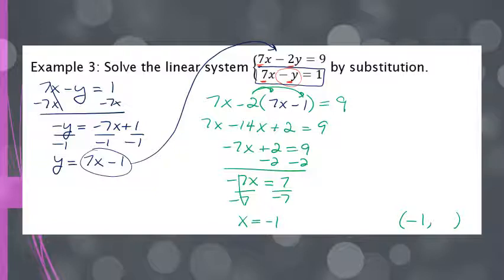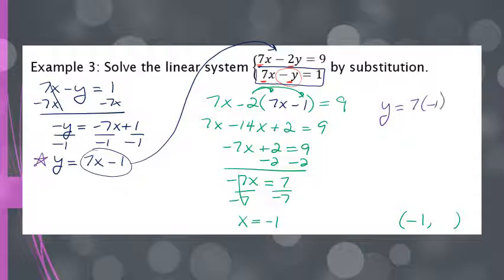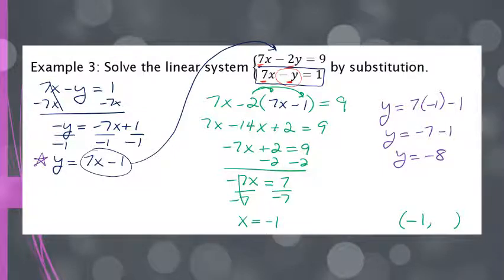Now I take x equals negative 1 and plug it back into one of my original equations to find y. I can use the equation that's already solved for y, but just be confident in your work since a mistake there would give the wrong answer. Plugging in negative 1 for x, I get y equals negative 8. So my final answer is the ordered pair negative 1, negative 8.